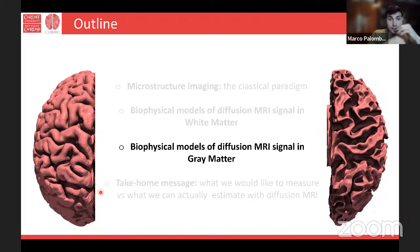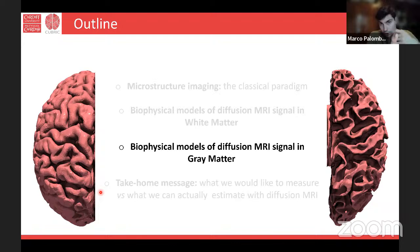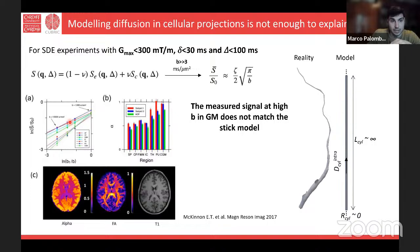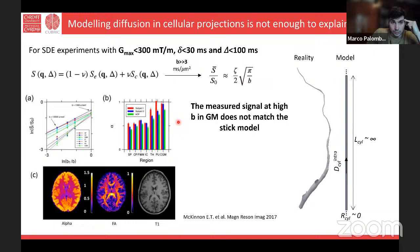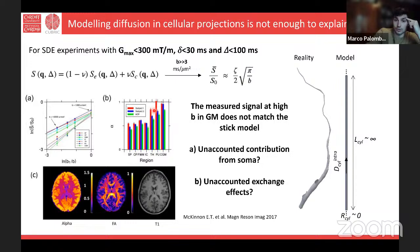The question is whether this stick model holds for gray matter. Emily McKinnon in 2017 showed that if you focus on white matter, the signal is linear in 1 over square root of B, as expected. But in gray matter, there is a deviation from this linear trend, meaning the power law scaling as 1 over square root of B is not supported by gray matter data. The power law exponent alpha equal to 0.5 holds consistently for white matter across datasets and subjects, but gray matter is consistently not 0.5. So something is missing in the model.